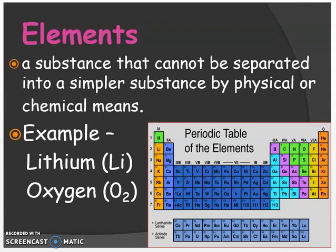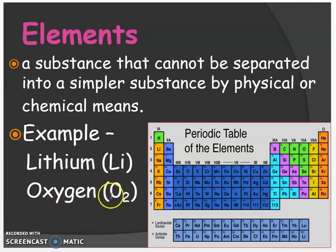First, let's talk about the periodic table. The periodic table contains elements. Elements are a substance that cannot be separated into a simpler substance by physical or chemical means. For example, we have lithium, whose chemical symbol is Li, and oxygen gas is O2.